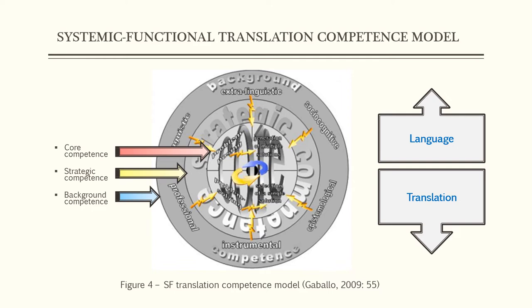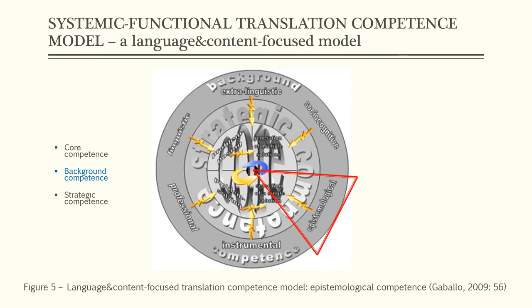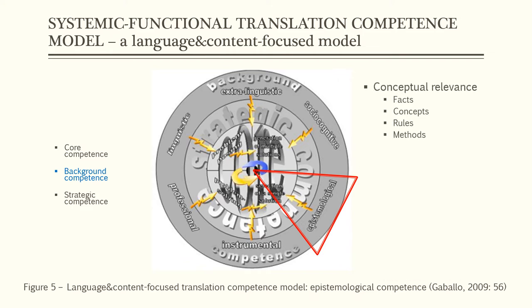How do we operationalise this model? That is, how do we turn our model into an operating agenda? Within the systemic functional model, the epistemological competence is a point of entry that provides the framework explaining how the subject is organised. It provides insights into its conceptual relevance — that is, the facts, concepts, rules, and methods typical of the subject.